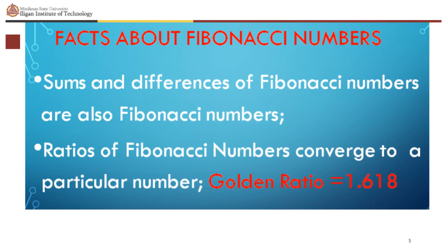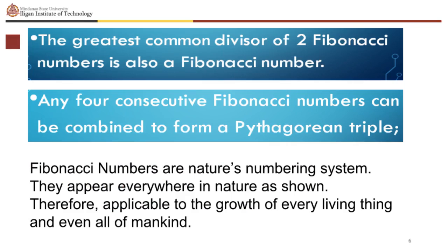Here are some facts about Fibonacci numbers you can investigate. Sums and differences of Fibonacci numbers are also Fibonacci numbers. Ratios of Fibonacci numbers converge to a particular number — the golden ratio, equal to 1.618. The greatest common divisor of two Fibonacci numbers is also a Fibonacci number. Any four consecutive Fibonacci numbers can be combined to form a Pythagorean triple. Fibonacci numbers are nature's numbering system, appearing everywhere in nature and applicable to the growth of every living thing.